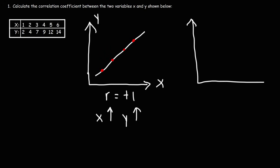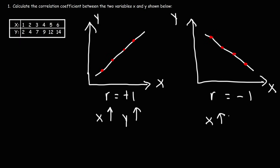Here's another scenario. Here we have points on the line, but notice the line is going down. So the correlation coefficient will be equal to negative one. As x increases, y decreases, and so in that case we have an inverse relationship.